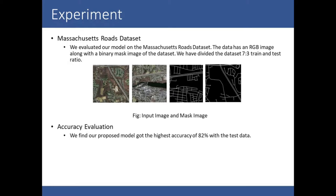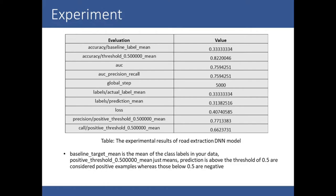For accuracy evaluation, the proposed model achieved the highest accuracy of 82% on the test data. The accuracy metrics include: accuracy baseline label mean, accuracy threshold, accuracy precision recall, and global step. We also tracked labels, label mean, prediction mean, and loss.